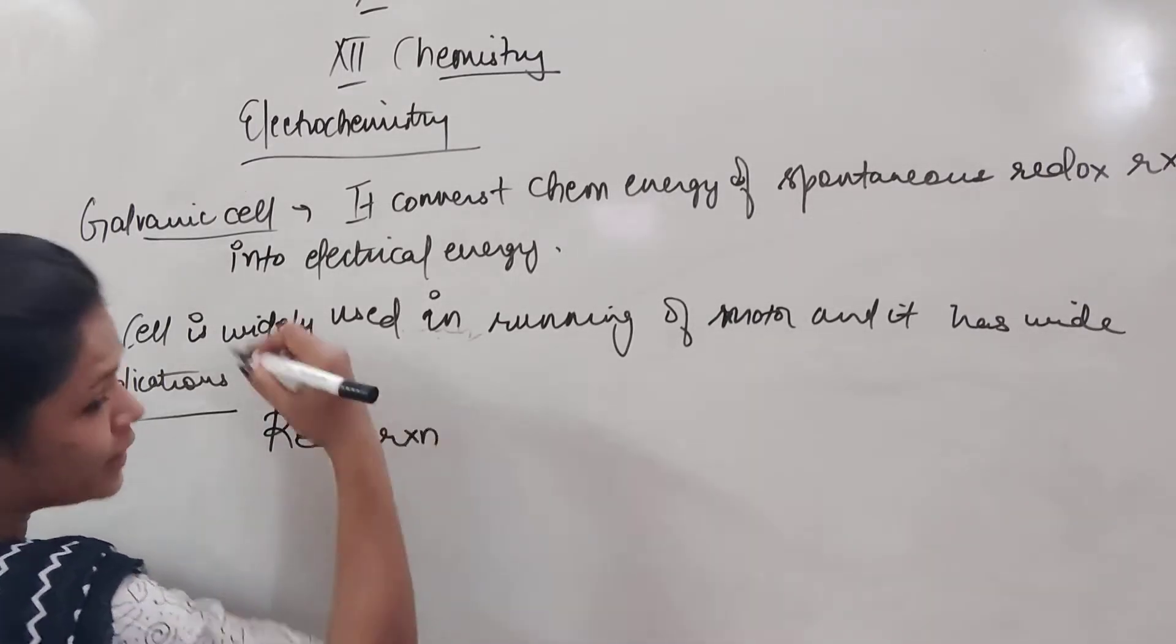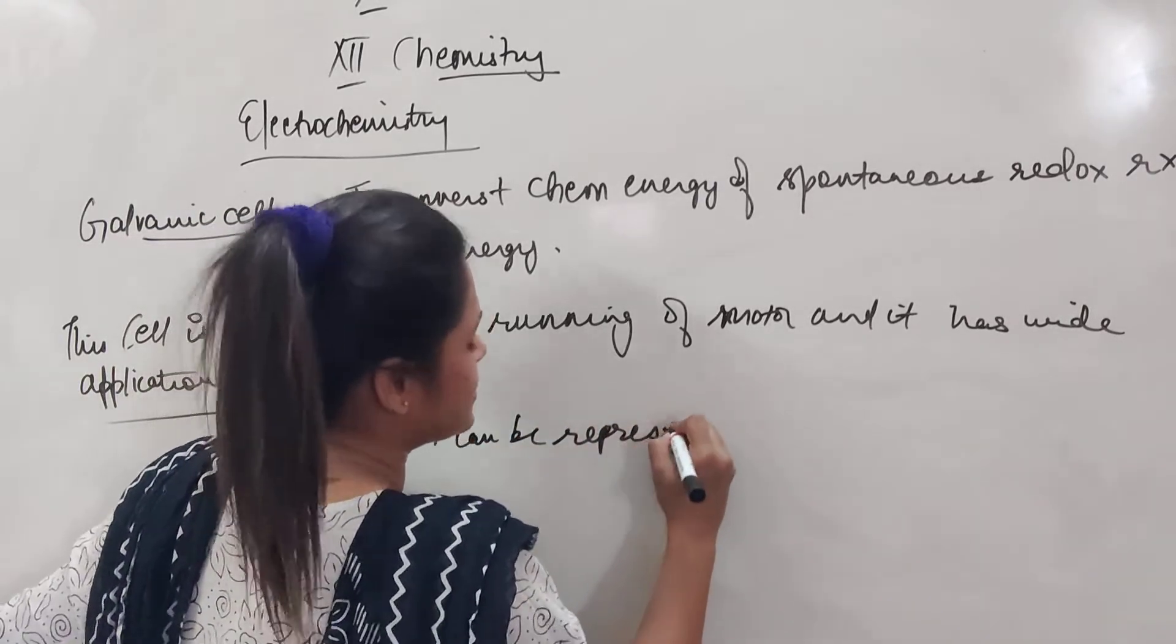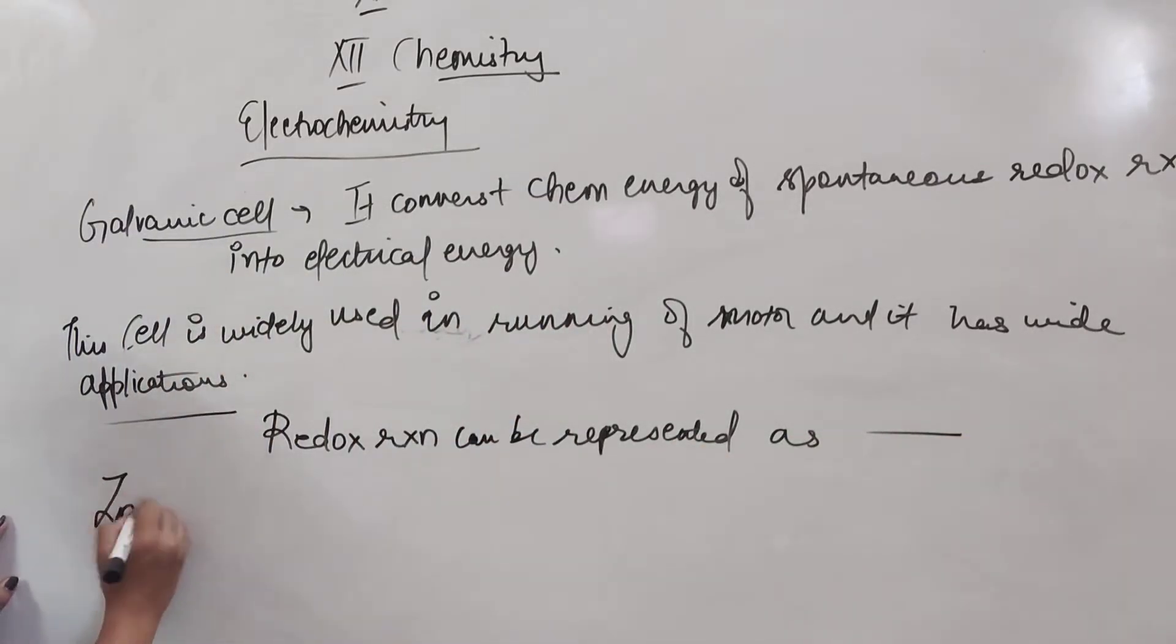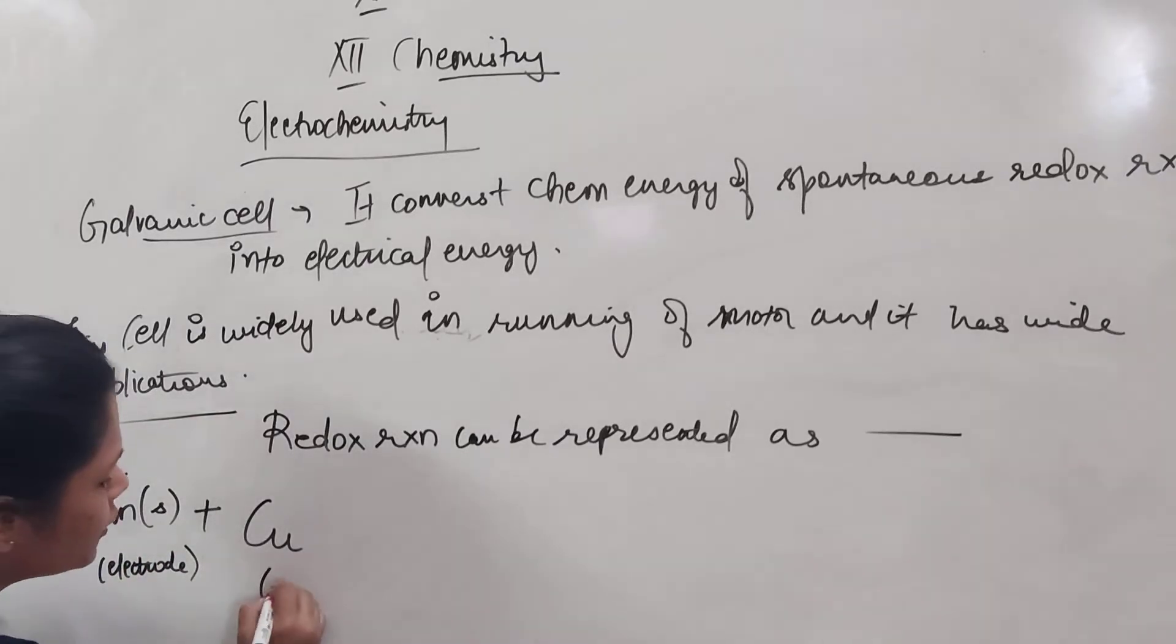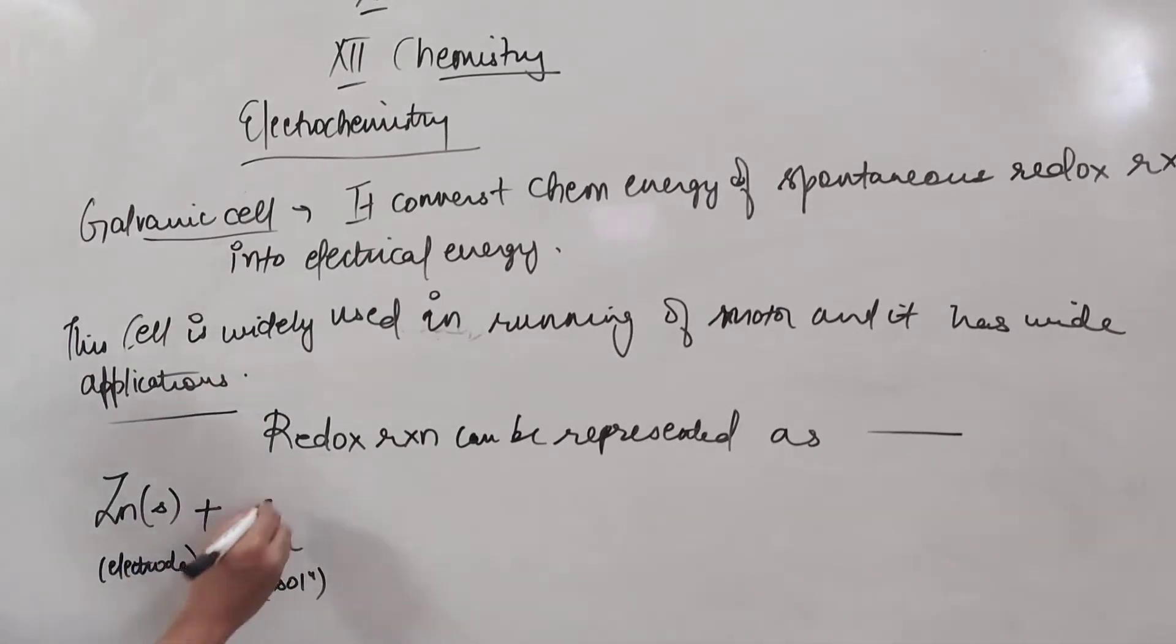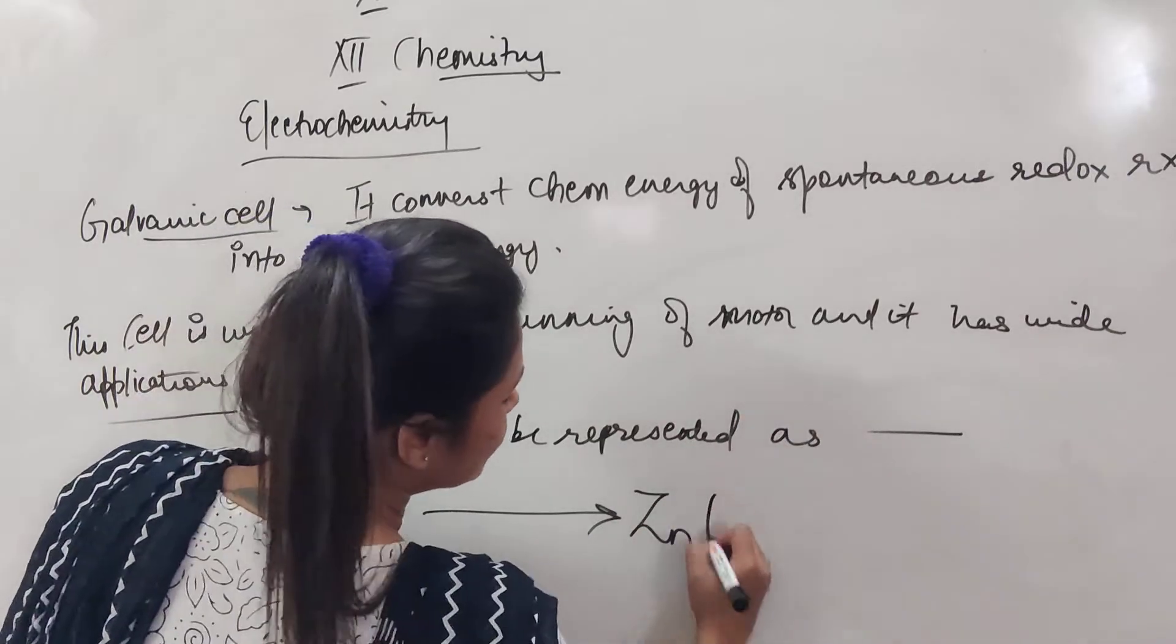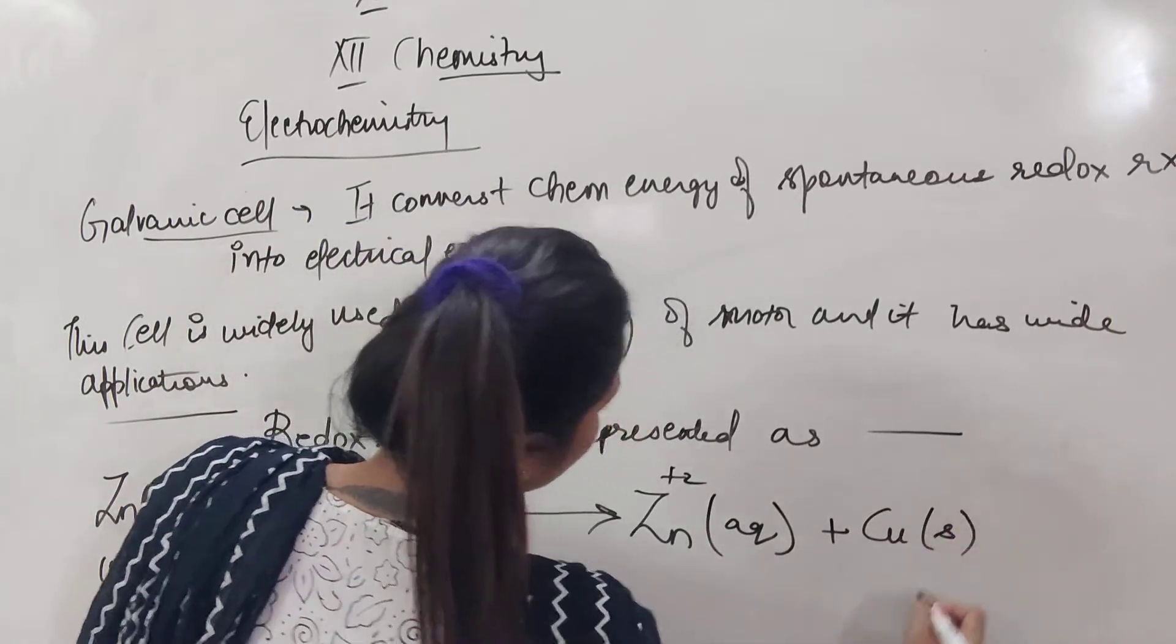So redox reaction that is happening inside, can be represented. We were having zinc on one side, so let us say zinc solid, then it was reacting with copper sulfate solution. So in solution, copper sulfate will get broken into copper ions, so it will be Cu²⁺ aqueous. And then we will get Zn²⁺ aqueous and copper electrode, that is copper solid.